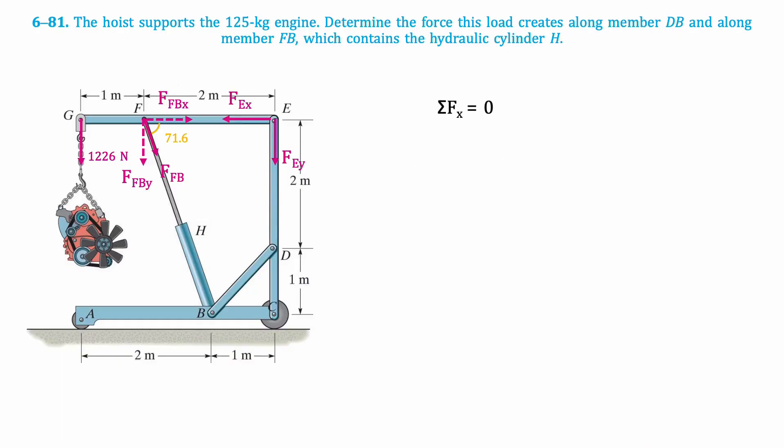Next, we'll take the sum of horizontal forces to find FEX, since that'll help us find the force along member DB later on. This is the resulting equation, which when isolated for FEX results in 613 newtons. We'll put this value off to the side for now.